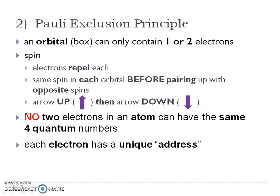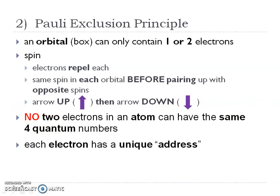The Pauli exclusion principle states that these orbitals — or boxes as I call them — can only contain one or two electrons. These electrons repel each other because they have the same charge. So each orbital is going to have one electron first, before it starts pairing up. We show opposite spins by drawing the first electron as an arrow up and the second electron as an arrow down. No two electrons in an atom have exactly the same quantum numbers — every electron has a unique address.